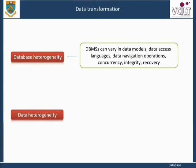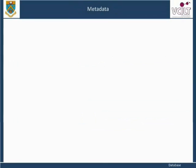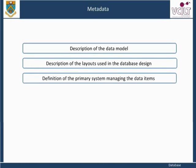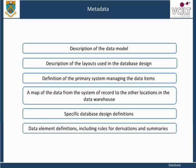Data heterogeneity refers to the difference in the way data is defined and used in different models, including homonyms, synonyms, unit incompatibility, different attributes for the same entity, and different ways of modeling the same fact. The metadata repository should contain information such as a description of the data model, description of the layouts used in database design, definition of the primary system managing the data items, a map of the data from the system of record to other locations in the data warehouse including descriptions of transformations and aggregations, specific database design definitions, and data element definitions including rules for derivations and summaries.